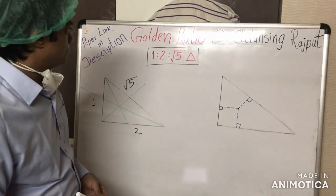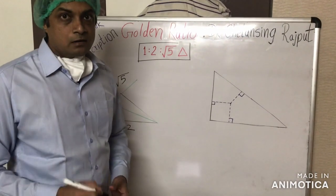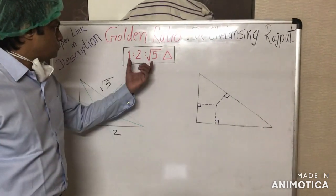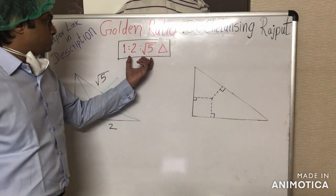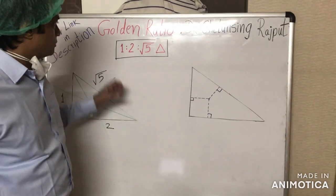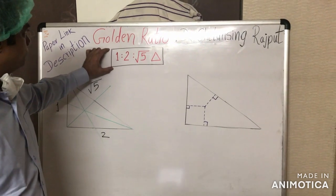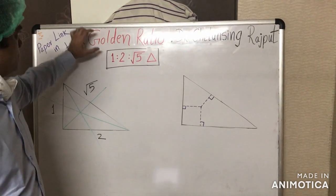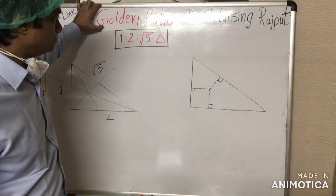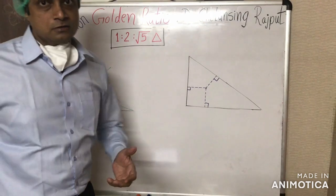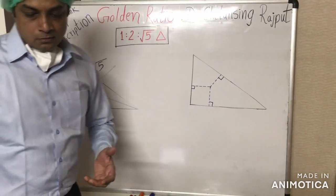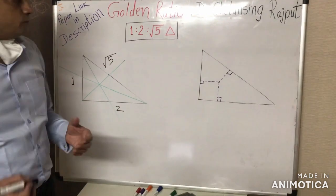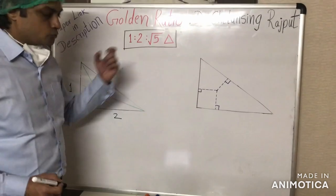Hello. So far we have seen how this spatial right triangle, the 1-to-√5 triangle, is closely associated with the golden ratio. In this part, I will elaborate on some other golden features of this triangle.